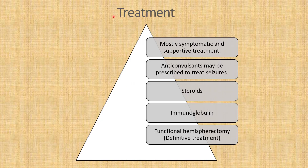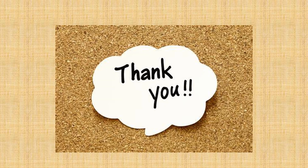Treatment for Rasmussen's encephalitis is very limited; mostly it is symptomatic and supportive. We start anticonvulsants to treat the seizures. There is some indication for steroids — either injectable methylprednisolone or oral prednisolone for a short period with tapering — though its role is a little doubtful. We can use immunoglobulin (IVIG) for this condition. Functional hemispherectomy is basically the definitive treatment. This is all about the case of Rasmussen's encephalitis. Thank you.